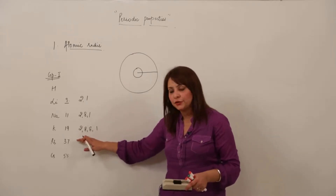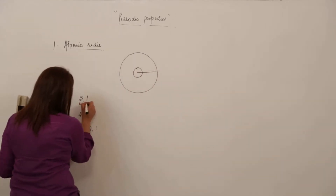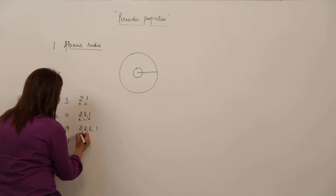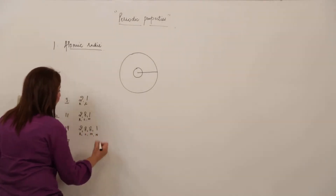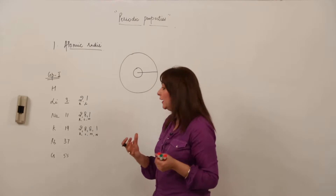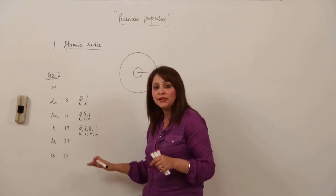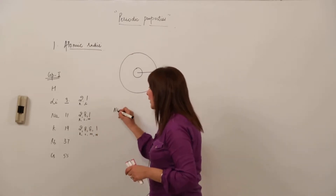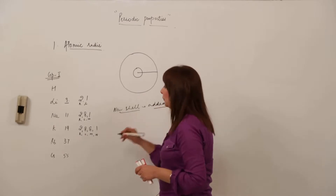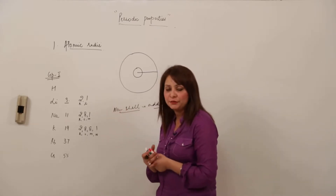Just write the electronic configuration up to potassium for your level. Lithium has two shells: K and L. Sodium has three shells: K, L, M. Potassium has four shells: K, L, M, and N. So out of lithium, sodium, and potassium, which will be bigger? Potassium contains four electron clouds, sodium three, lithium two. As we move down the group, every time a new shell is being added, so the size goes on increasing.